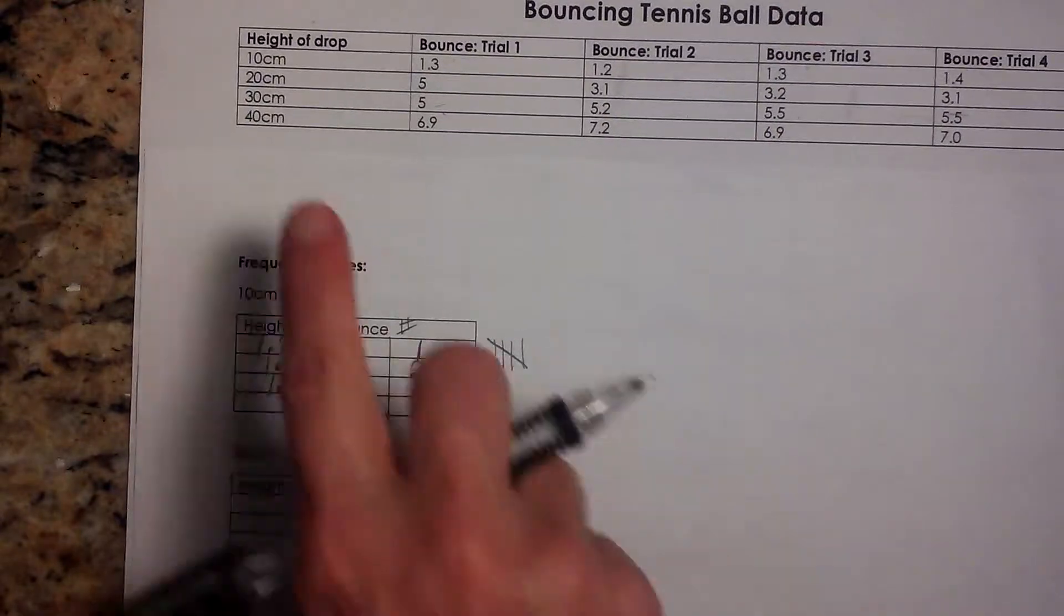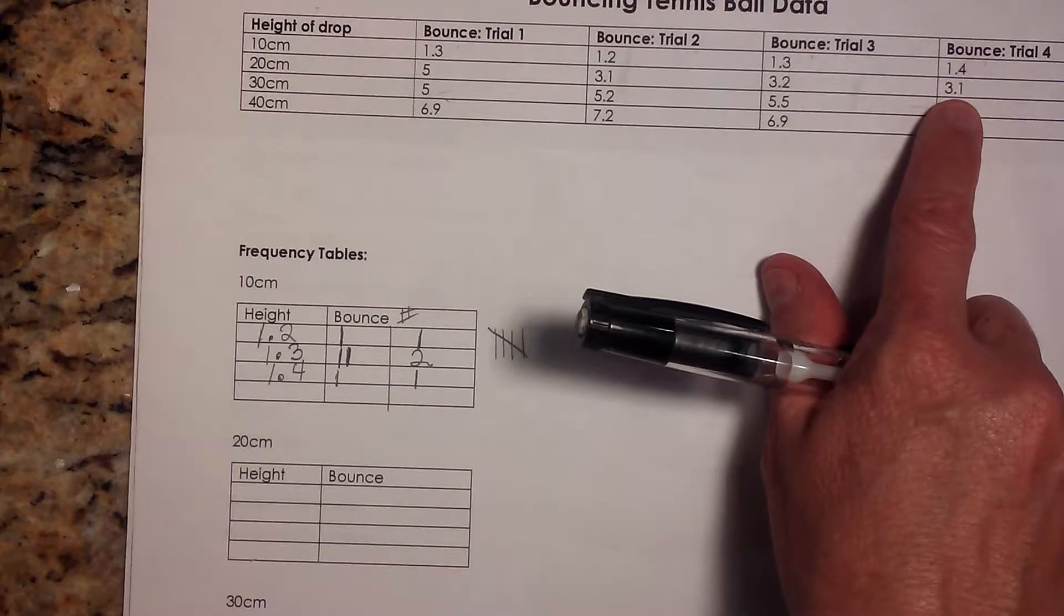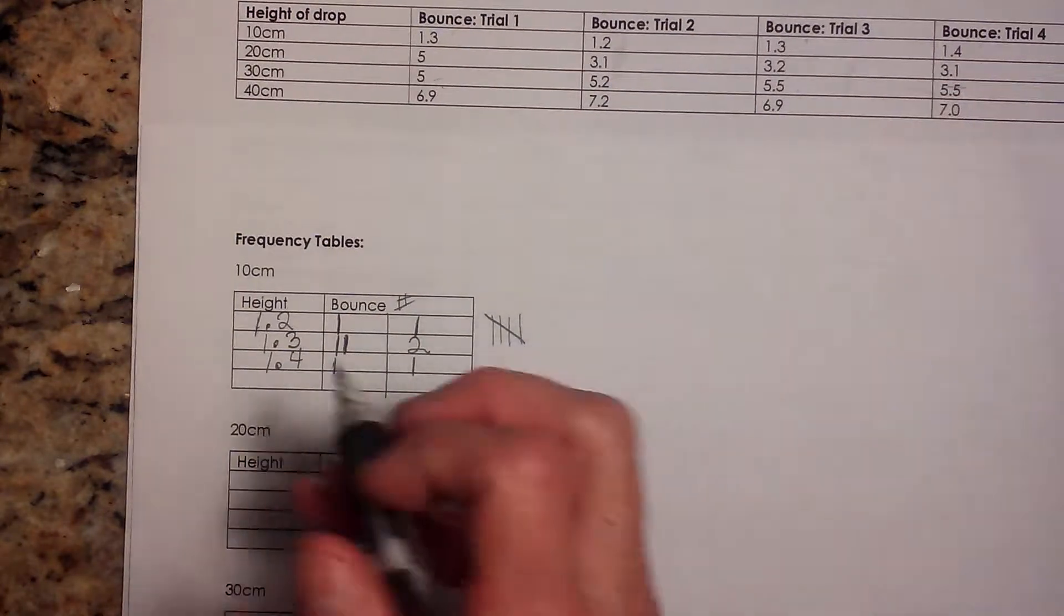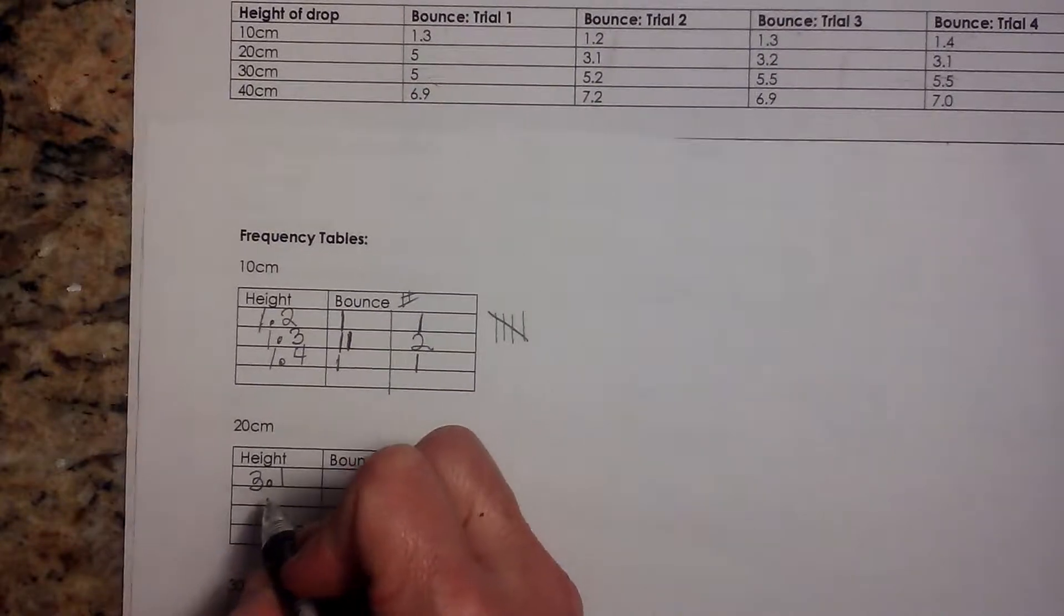OK, let's do the same thing for 20. OK, 20. We have 5, 3.1, 3.2 and 3.1. Well, what's the smallest? 3.1. That's our height. Our next greatest one is 3.2 and then 5.